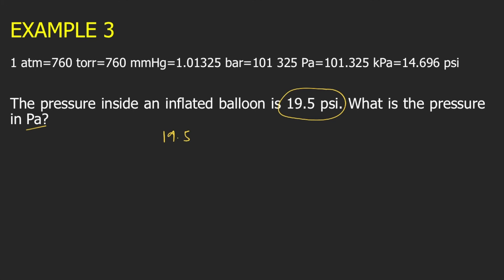So the given is 19.5 pounds per square inch, and we will convert this into Pascal. So you start with the given, 19.5 PSI. You multiply it by the conversion factor. 14.696 PSI is equal to 101,325 Pascal. So you put 14.696 PSI below, and you put 101,325 Pascal above, so that PSI will cancel. What remains is Pascal.